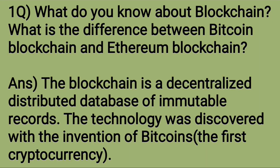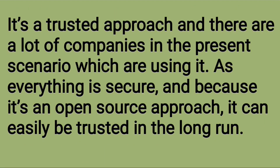What do you know about blockchain and what is the difference between Bitcoin blockchain and Ethereum blockchain? The blockchain is a decentralized distributed database of immutable records. The technology was discovered with the invention of Bitcoin, the first cryptocurrency. It's a trusted approach and there are a lot of companies in the present scenario which are using it. As everything is secure and because it's an open source approach, it can easily be trusted in the long run.